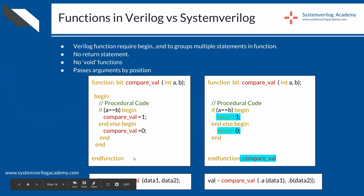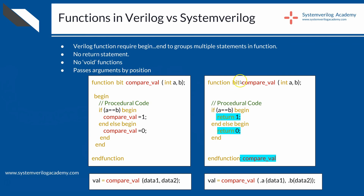A Verilog function creates an implied variable of the same name as itself, and at the end of the function its return value is assigned to this variable. Also, in Verilog a function must always return a value, but in SystemVerilog you can give the return type as void if the function is not returning any value. Finally, Verilog always passes arguments by their position. Though not commonly used, SystemVerilog allows you to pass actual arguments explicitly by name, similar to module instantiation, as shown here.